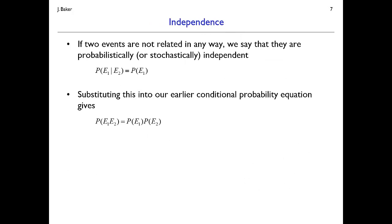There is a related property of independence. Events E1 and E2 are probabilistically independent if the probability of E1 given E2 equals the probability of E1 — conditioning on E2 did not change the probability of E1. Substituting into the intersection formula, we get that P(E1 ∩ E2) equals P(E1) times P(E2), and this holds if and only if E1 and E2 are independent.